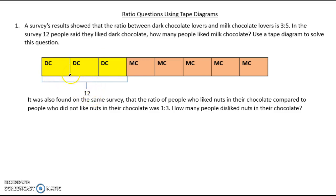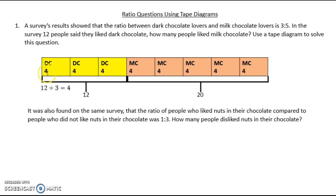I've got to evenly distribute those 12 people over these 3 segments. I need to find out how to evenly distribute 12 over 3 pieces — that happens to be a division problem: 12 divided by 3, which equals 4. So I'm going to write 4 in each one of these pieces. Because this tape diagram represents even pieces, I can write 4 in each segment, including the milk chocolate segments.